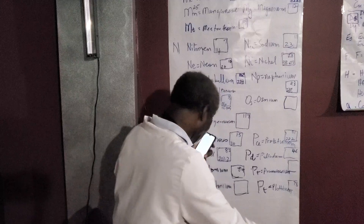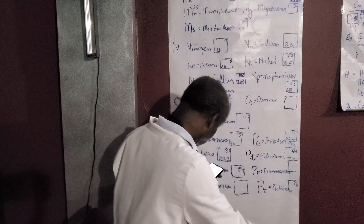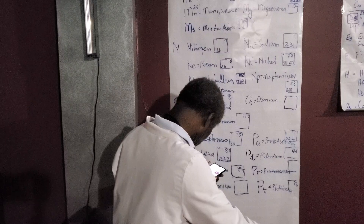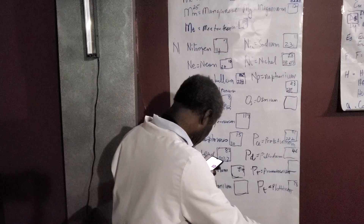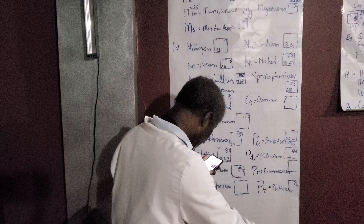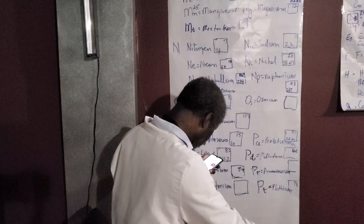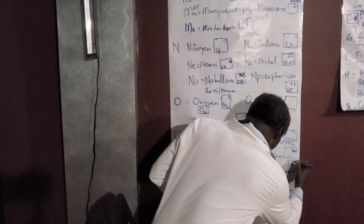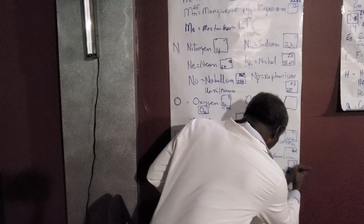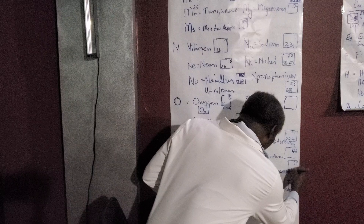For PR, we have praseodymium — atomic number 59 and atomic weight 140.